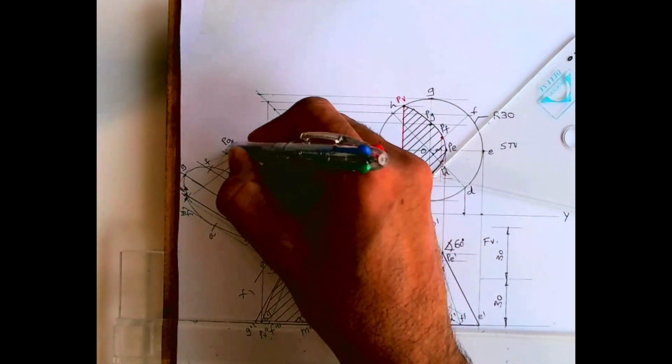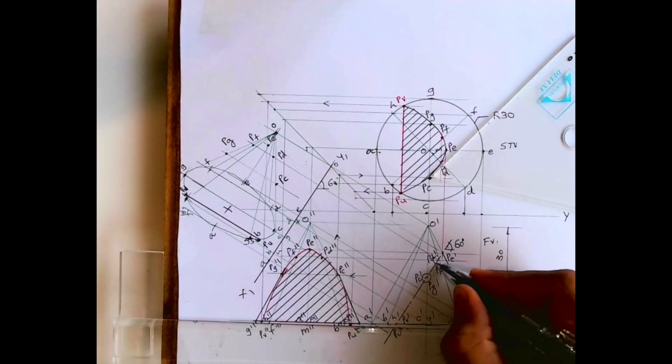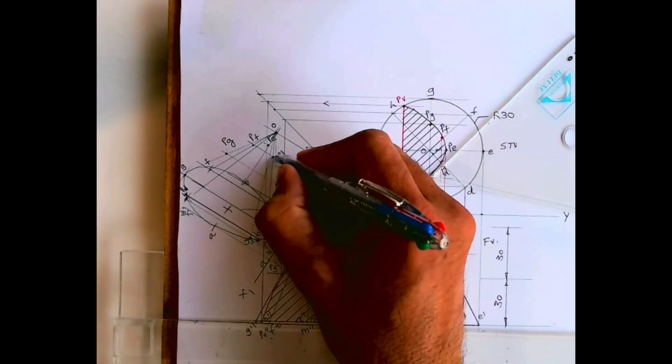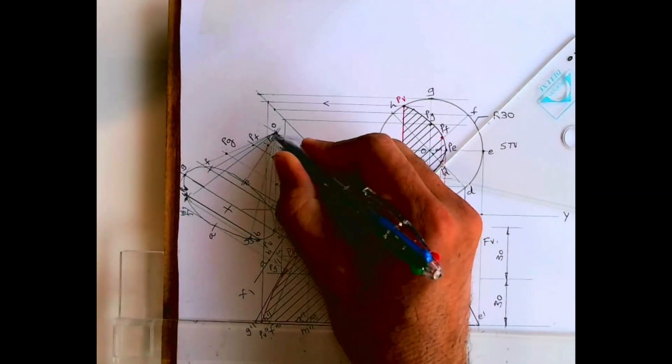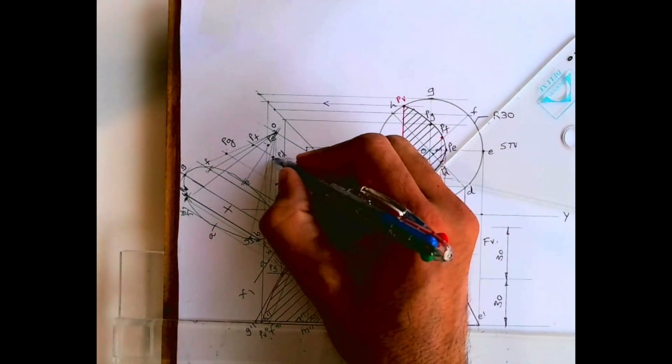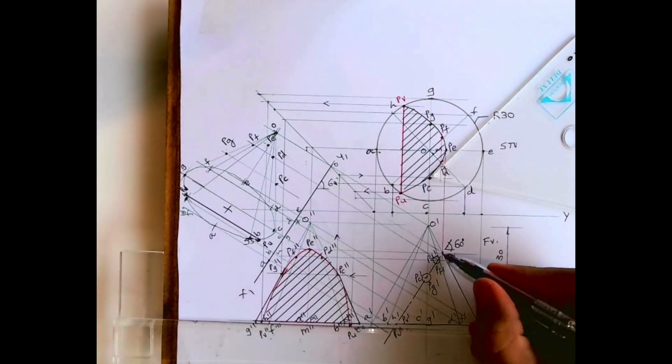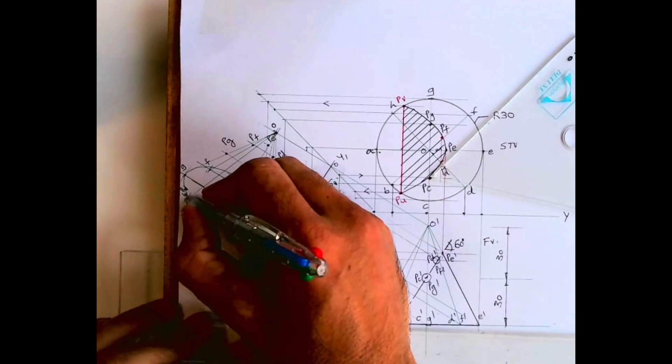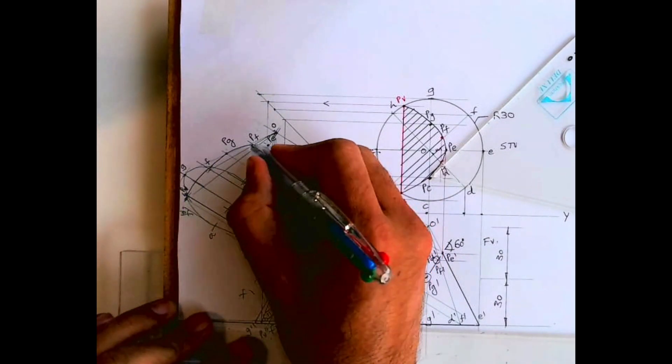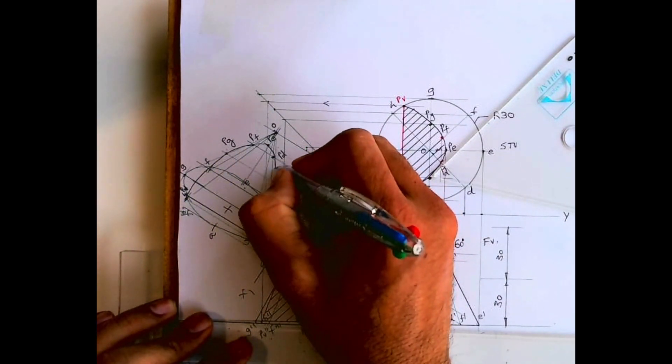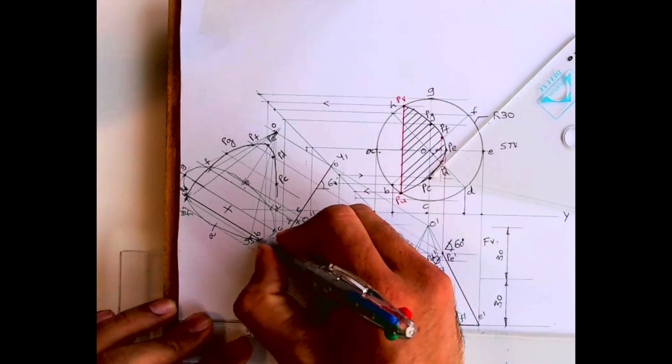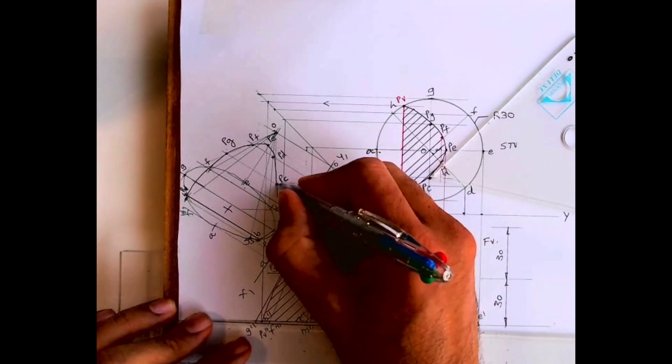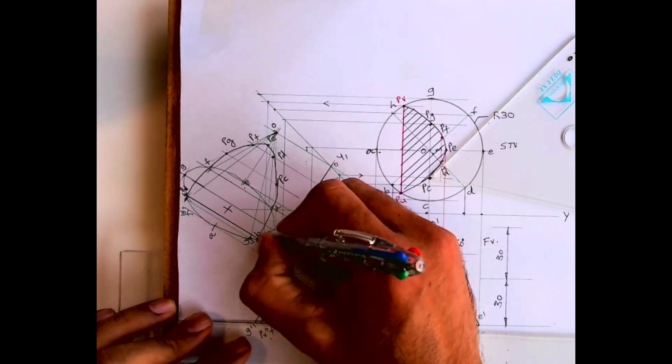Now see, this point is here: c and g, d and f, pd, pf. So on od, if of, so I'm just showing you again just in case if you want to be double sure. Then you join all these points with freehand. This is how you will get the required auxiliary view, remaining auxiliary view when the object is cut.